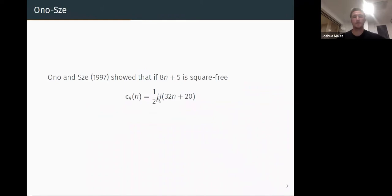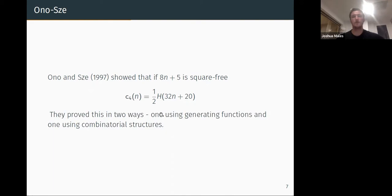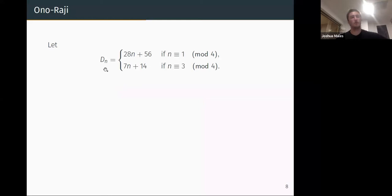And you'll see here, I mentioned t equals 2 and 3. Well, C4 is somehow special. And so this is Ono-Sze in 1997. And they showed that if 8n plus 5 is square-free, the number of 4-core partitions is given by a class number. So this is somehow a strange connection between 4-core partitions and class numbers on the right hand side.